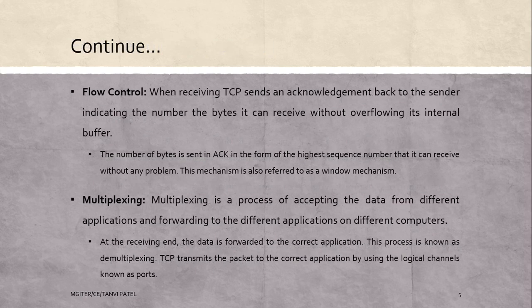Next is flow control. When receiving, TCP sends an acknowledgement back to the sender indicating the number of bytes it can receive without overflowing its internal buffer. The number of bytes is sent in the acknowledgement in the form of the highest sequence number that it can receive without any problem. This mechanism is also referred to as a window mechanism.